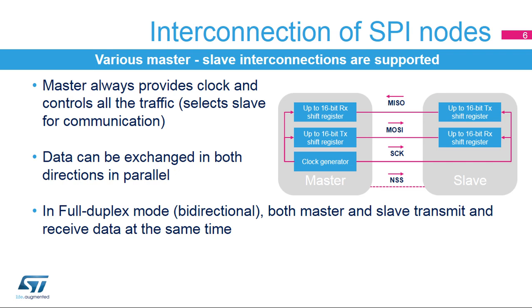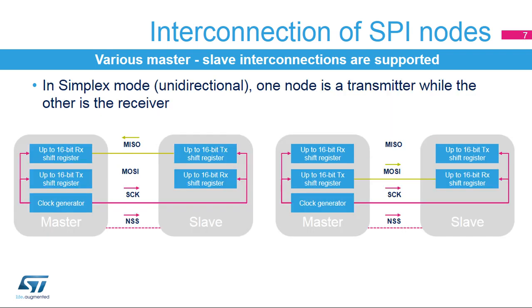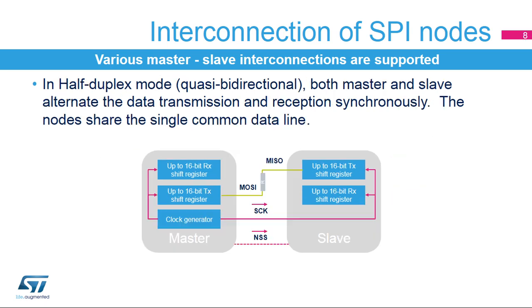In full duplex mode, both data lines are used and synchronous data flows in both directions. In simplex mode, one node transmits data while the other receives the data. Data only flows in one direction. Depending on the communication direction, only one data line is used. Unused SPI pins can be used for other purposes. Half duplex mode integrates the previous two modes with sharing a single line for data exchanges, and data flows in a single direction at a time.